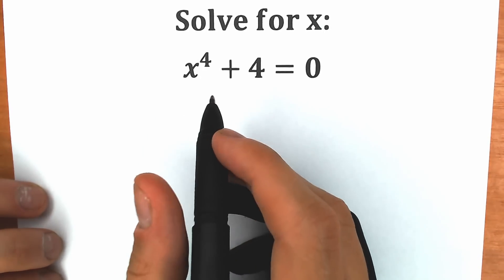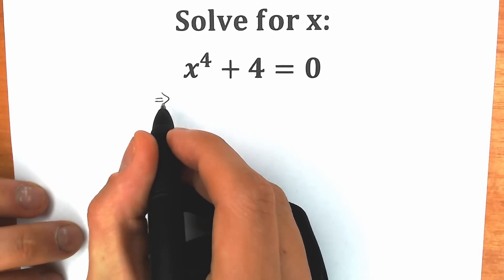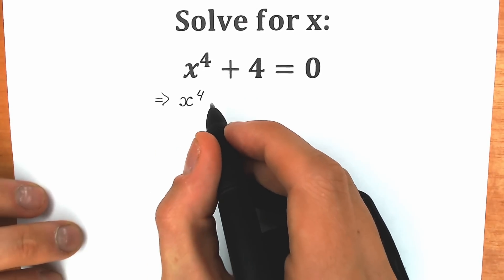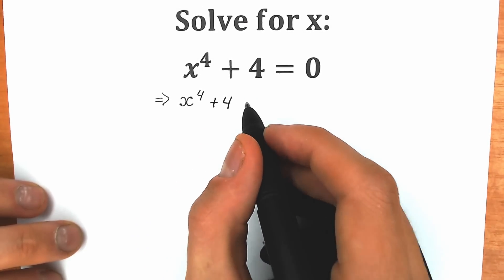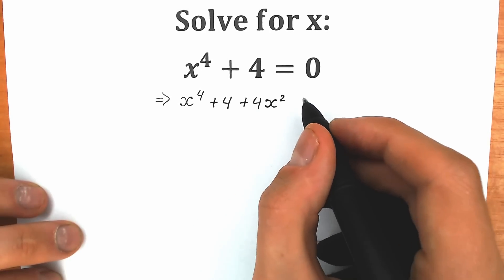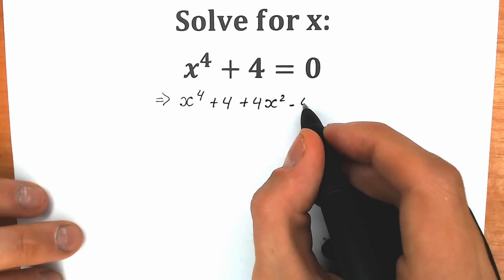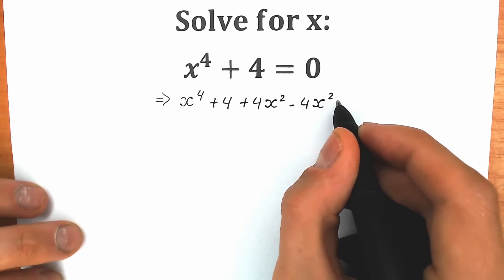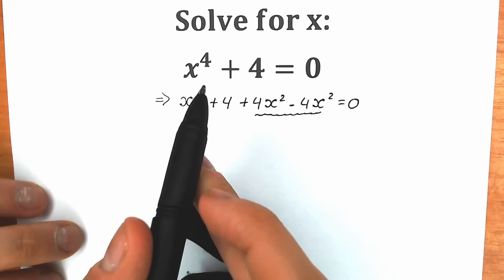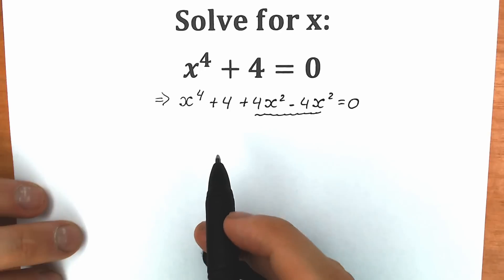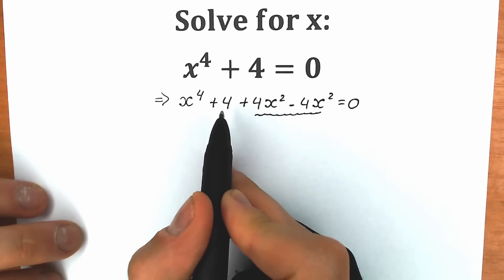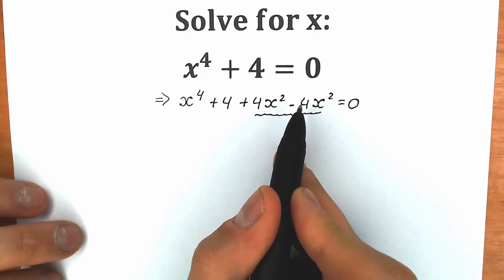Right now I'm going to show you a really great trick. So first of all, I'm going to rewrite this expression: x to the fourth power plus 4. I'm going to add 4x² to this expression and then subtract it — so minus 4x². Basically it changes nothing, so this expression is still equal to 0.